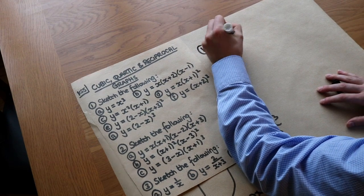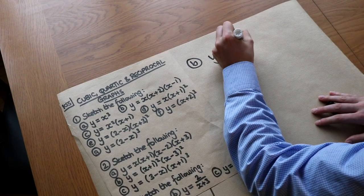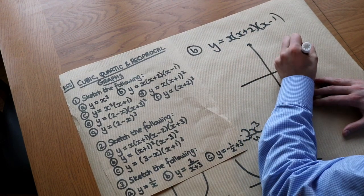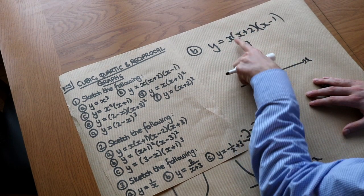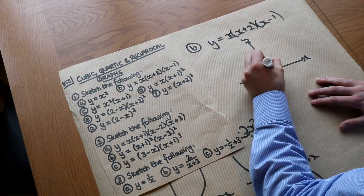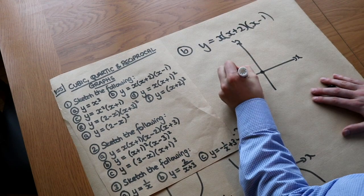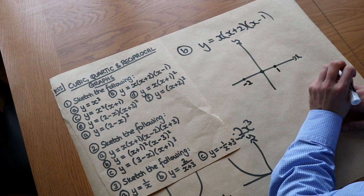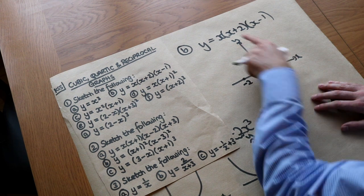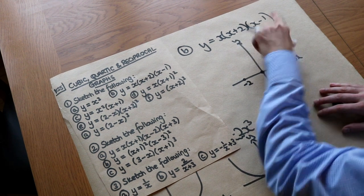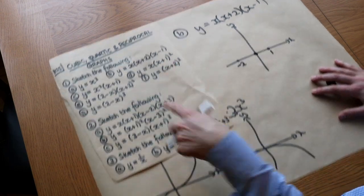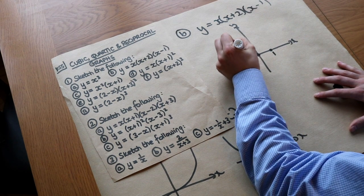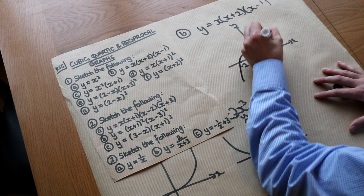Let's sketch some more of these. We've got y equals x(x+2)(x-1). The roots — where y equals zero — are x equals 0, x equals minus 2, and x equals 1. The y-intercept: if x is zero, 0 times 2 times minus 1 equals 0, so it passes through the origin. Using the general cubic shape with two swerves, it swerves up and swerves down.